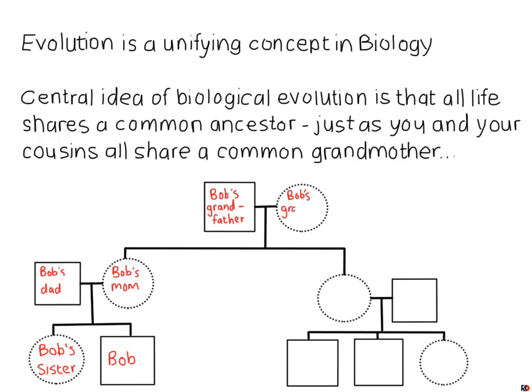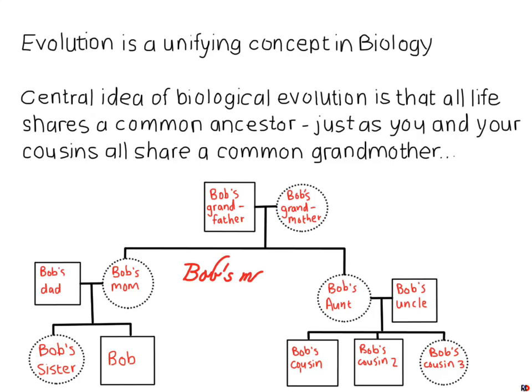This diagram is showing you a typical family tree. The round circles represent females and the squares represent males. In the bottom left we have Bob and Bob's sister, Bob's mom and Bob's dad. Bob's mom has two parents — Bob's grandfather and grandmother, the maternal grandfather and grandmother. And of course Bob's cousins number one, two, and three.